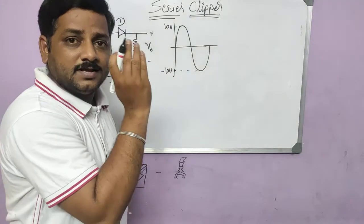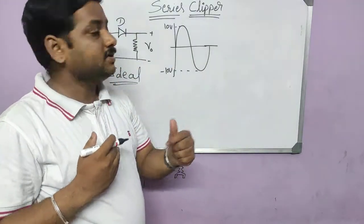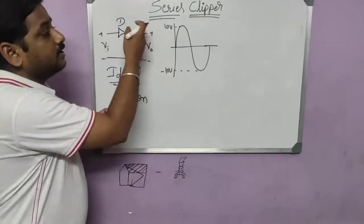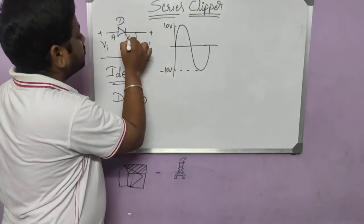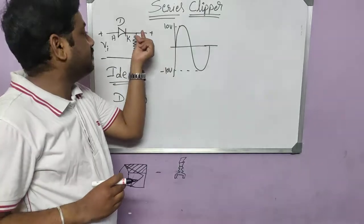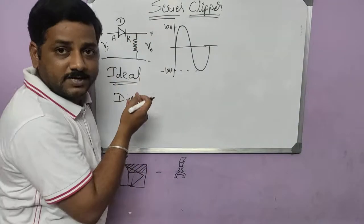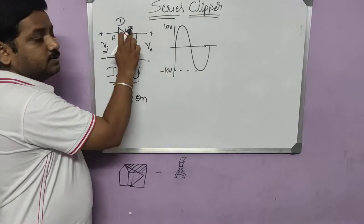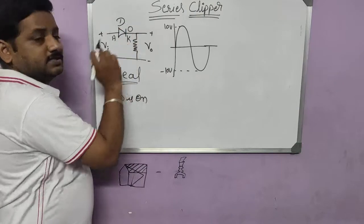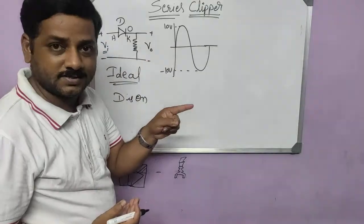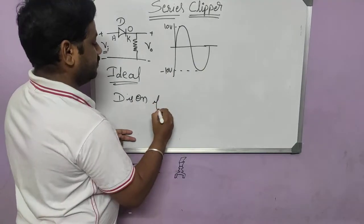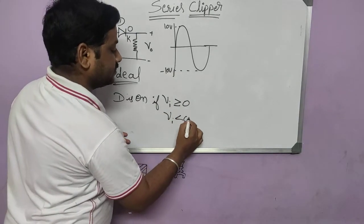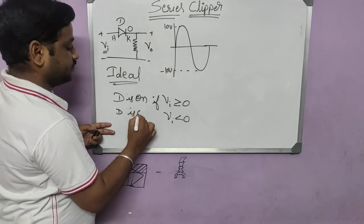We need to find the condition at which the diode will turn on and off. We can say the diode is ON if the anode has higher potential than the cathode. Now, there is no source at the cathode terminal, so the cathode will have zero volts — it is essentially grounded. So whenever the input is greater than zero, since input is given to the anode, the diode will turn on — it will be forward biased. So: diode is ON if Vin is greater than or equal to zero. If Vin is less than zero, then the diode is going to be OFF.